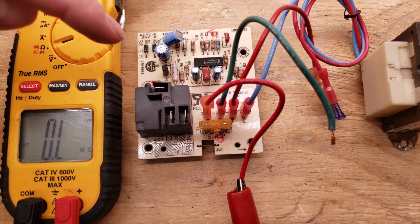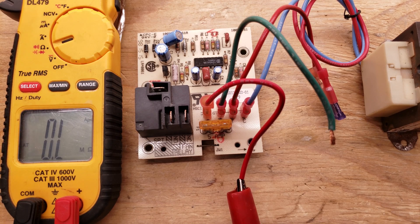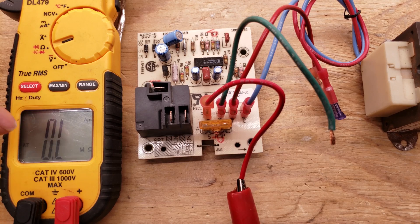When the contacts are supposed to be closed, you should be getting a reading very close to 0.0 ohms of resistance. When the contacts are supposed to be open, you should be getting a resistance reading of OL.